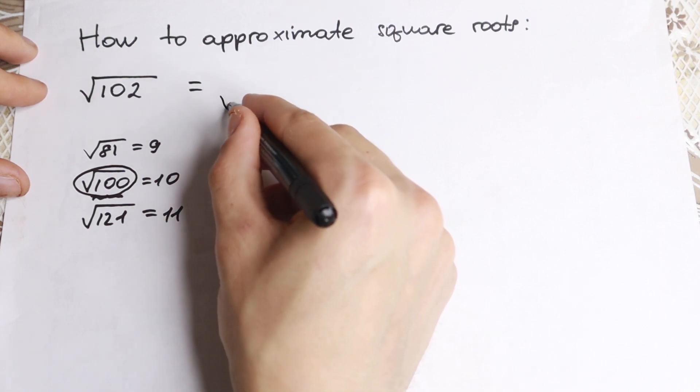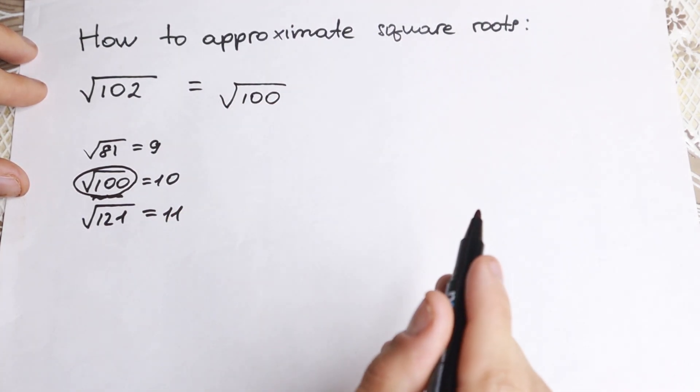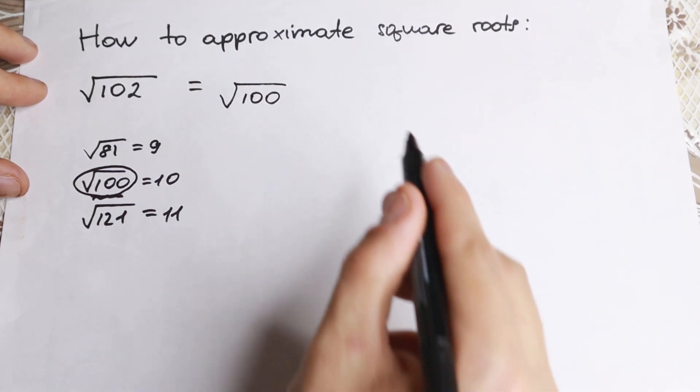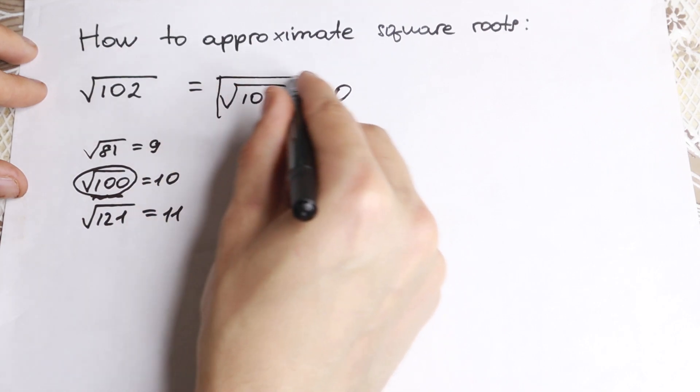So square root of 102 equals square root of 100. We can take this square root. This is the closest square root that we can take, equal to 10. So this is the first step that we need to know.